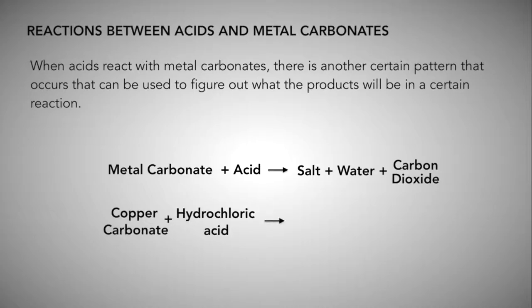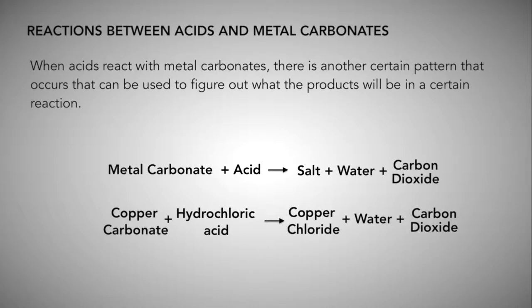For example, if you have copper carbonate and you react it with hydrochloric acid, you'll get copper chloride plus water plus carbon dioxide. In this example, copper carbonate is our metal carbonate, hydrochloric acid is our acid, and copper chloride is our salt — because salt is a metal and a non-metal in chemical terms — plus water and carbon dioxide.